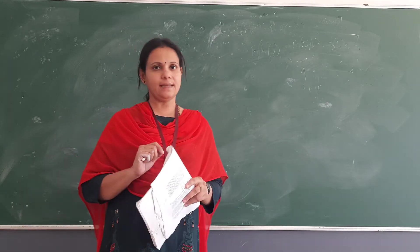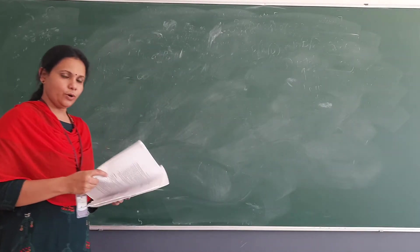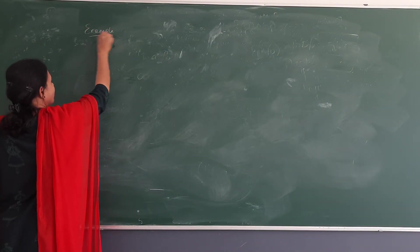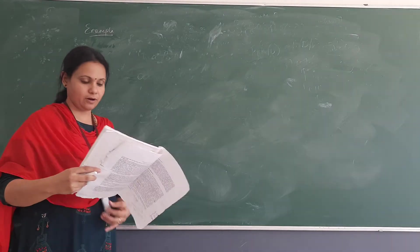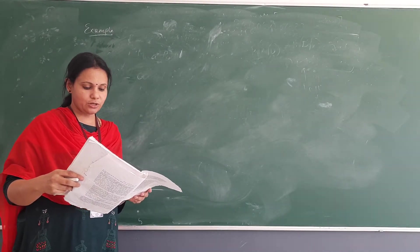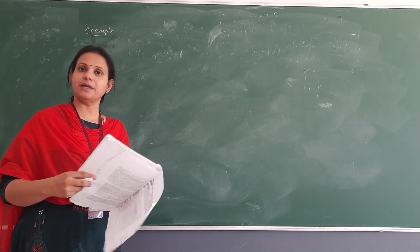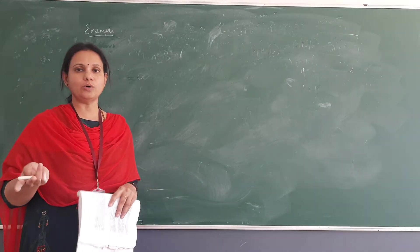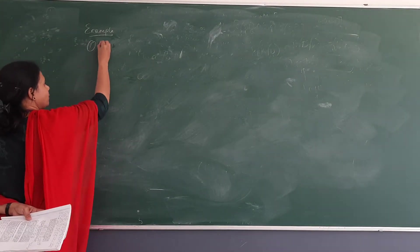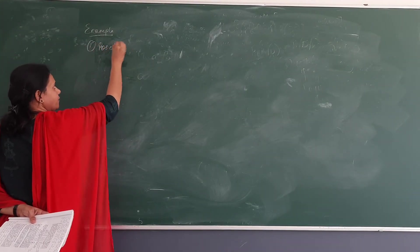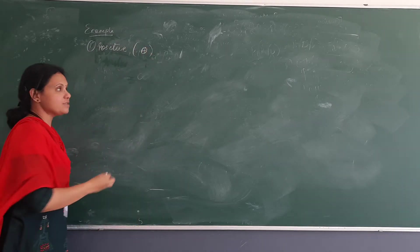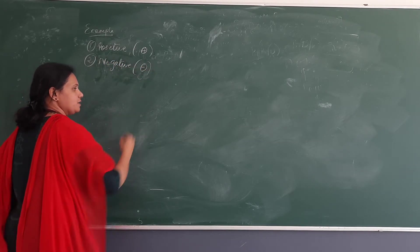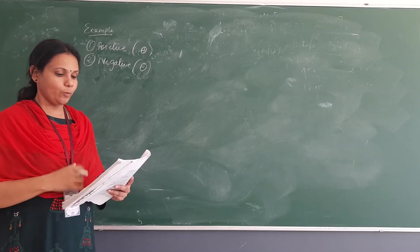Continuing with that, we will take an example problem and see how Bayes' theorem works. We have data of patients in two categories: patients having a particular form of cancer and patients which do not have cancer. Two outcomes — one is a positive outcome, meaning they have cancer, and the second is a negative outcome, meaning they do not have cancer.